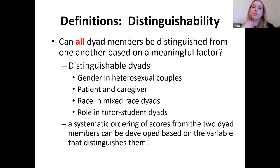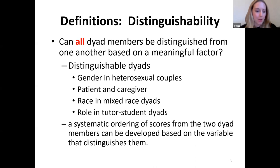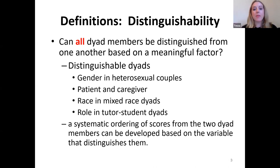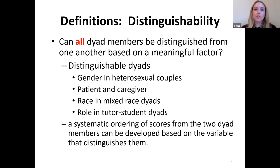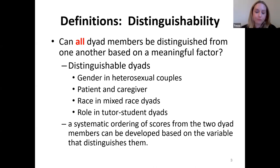Here are some examples of dyads that are distinguishable. This includes gender in heterosexual couples — if you're a relationships researcher with a man and a woman in each dyad, those dyad members would be distinguishable based on gender. In the patient-caregiver literature, you care about who the patient is and who the caregiver is. In the lab, we do a lot of research on cross-race interactions, where every dyad might have a white person and an Asian person, or a Black person and an Asian person.